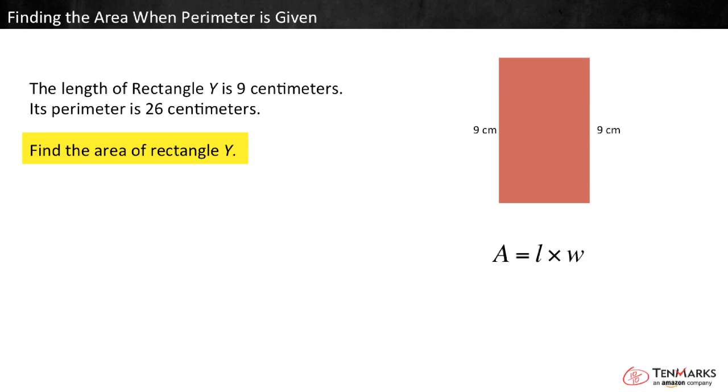Well, we don't have enough information to find the area yet. We know the length is 9, but we don't know the width. But we do know the perimeter. We can work backward from the perimeter to find the width.